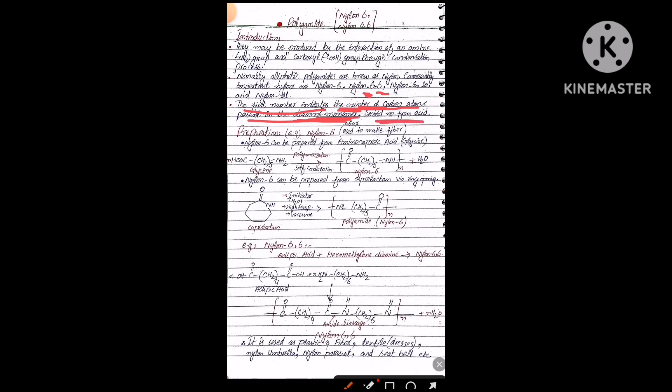Now we will move towards its preparation. First of all we will prepare nylon 6. This nylon 6 is mainly 60 percent used to make fiber. Nylon 6 can be prepared from amino capric acid. Another name of amino capric acid is glycine.